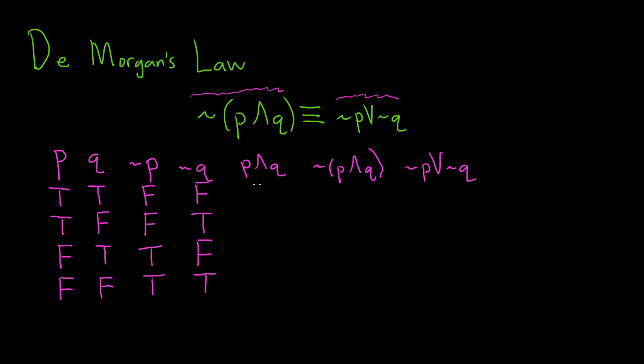For p and q, we just have to look at the columns for p and q. Recall that p and q will only be true when both p and q are true. Otherwise, it's false. So the only case when they're both true is the first case. We have true and true, so this is true. The rest of these have at least one instance of false. So false, false, and the last case, they're both false. That makes it super false, or just false.